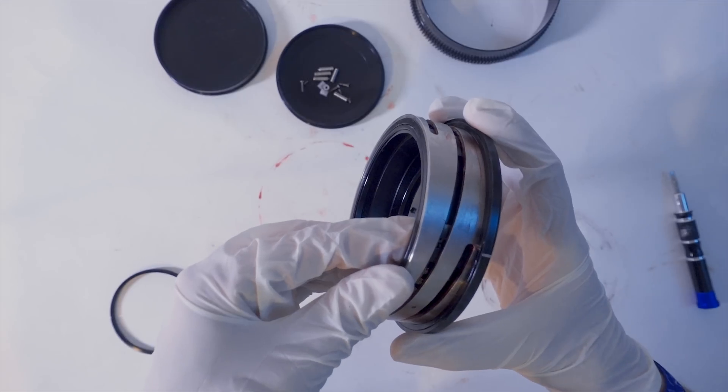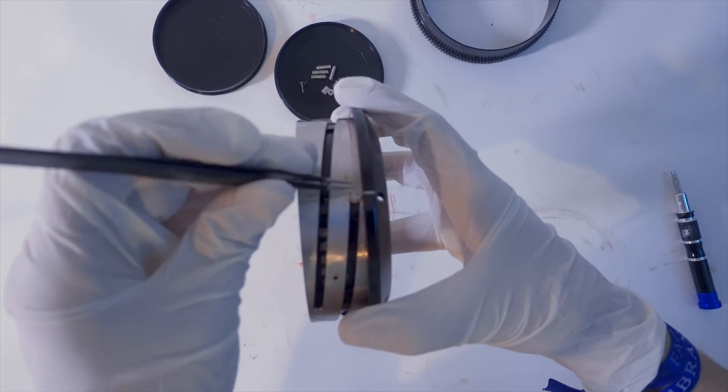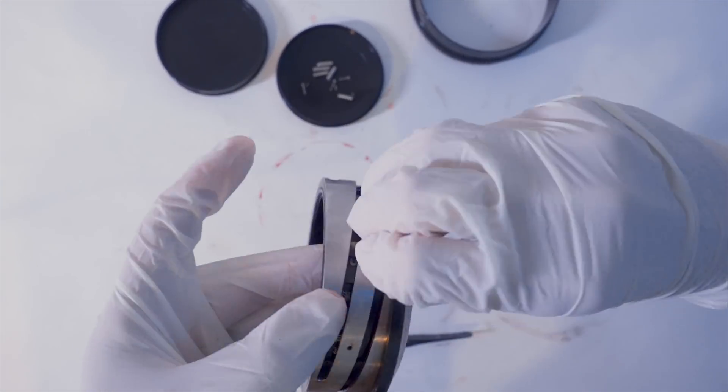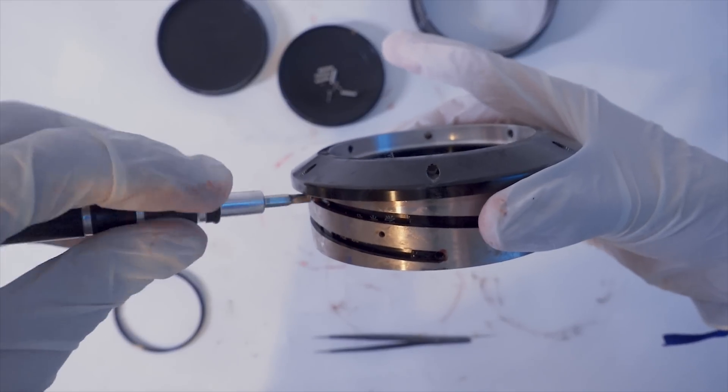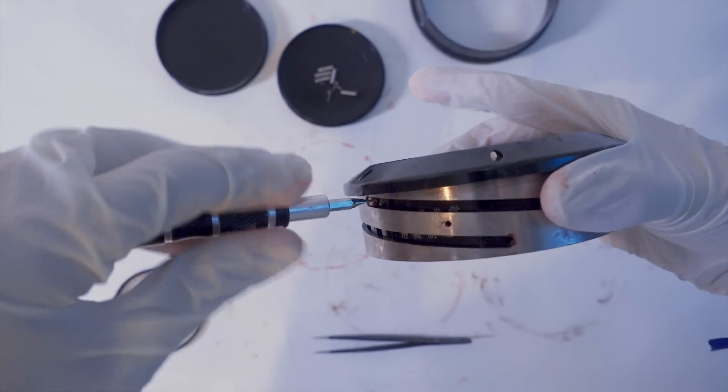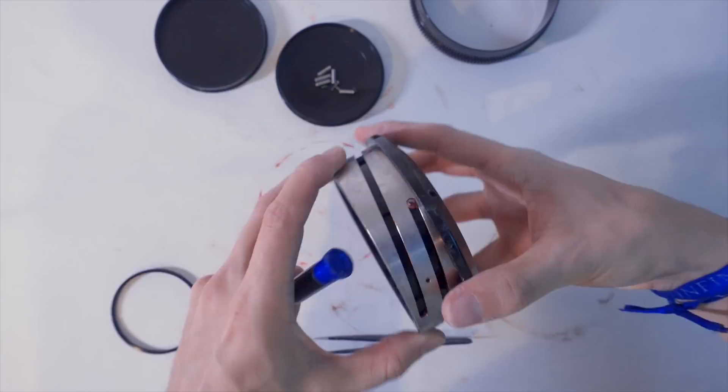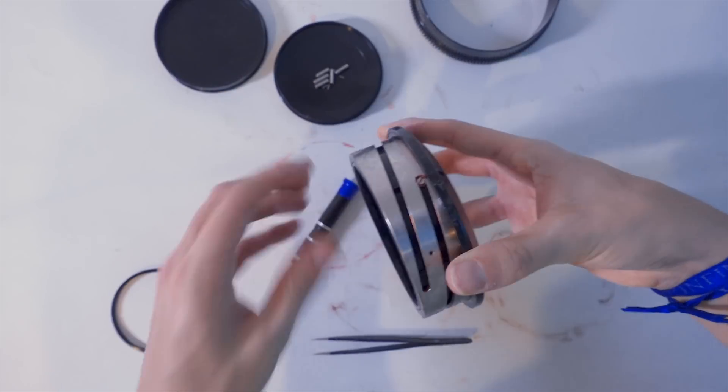Once you have everything where it should be, push in the little pins one at a time. Make sure all parts are flush and then put back the screws inside the cam sheaves. Do not over tighten. Go just enough so they don't protrude from the surface of the helicoid.